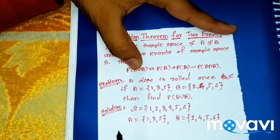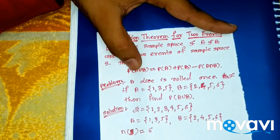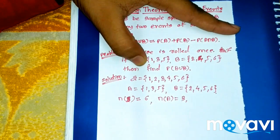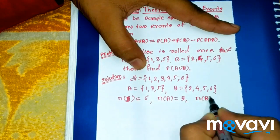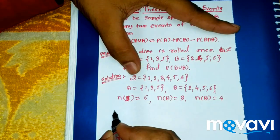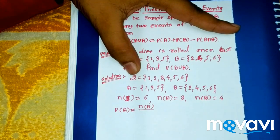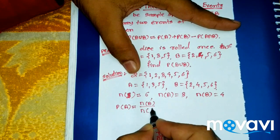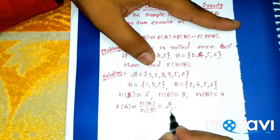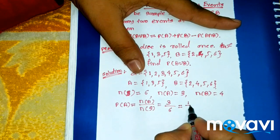Number of points in sample space S, denoted n(S), is 6. Number of points in event A, denoted n(A), is 3. Number of points in event B, denoted n(B), is 4. By definition of probability, probability of A is n(A) upon n(S), so P(A) = 3/6 = 1/2.